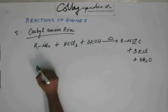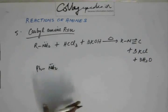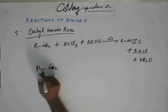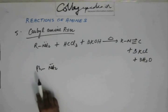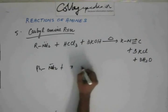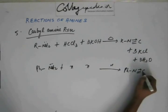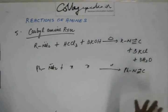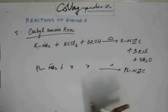This reaction will also be happening for aniline. Instead of R, if you have an aromatic ring, if you have a phenyl ring, then also the reaction will be the same. You'll have KCl and water. But the point is from amine, you'll have an isocyanide like this if you take chloroform and base along with it.